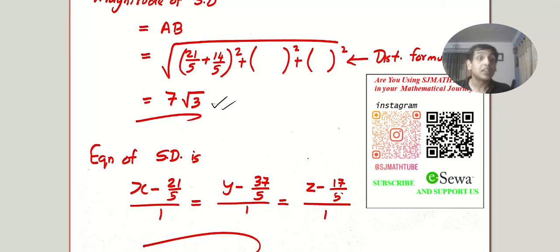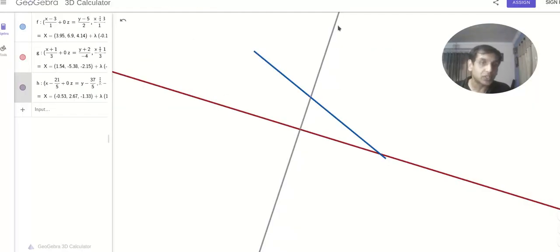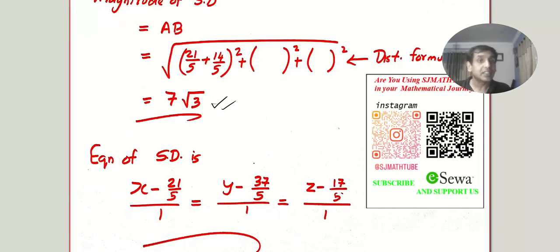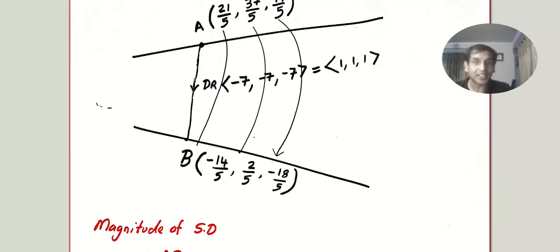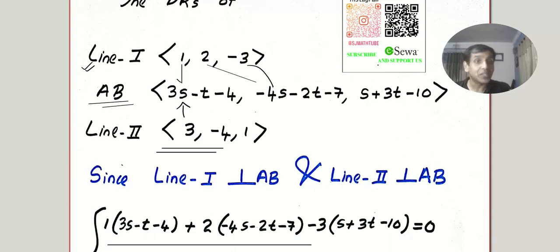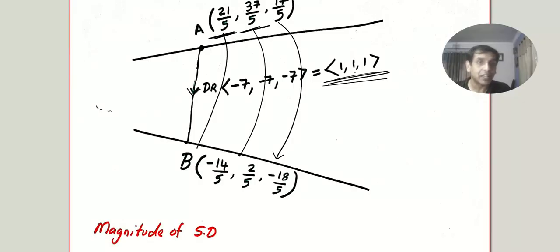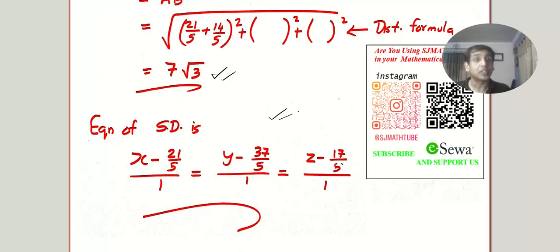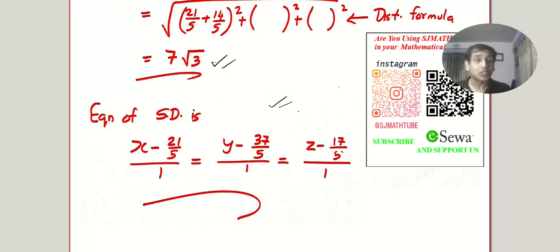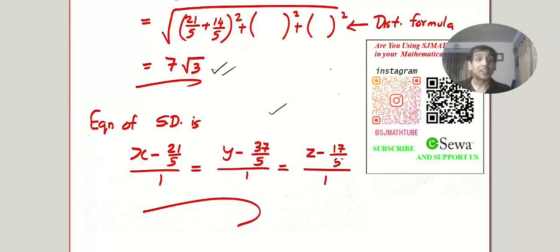The second thing is the equation of the shortest distance. We're using this long method so we can also find the equation of the line of shortest distance. To write the equation of a line you need two things: a point on the line and a direction. We know two points on the line, so we can use either one. We already calculated the direction — with the values of s and t substituted, it simplified to 1, 1, 1. Here is the equation of the shortest distance.